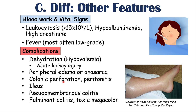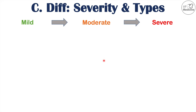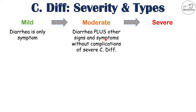Toxic megacolon is a toxic acute state of the colon with expansion or dilatation of the colon. C. diff infection is often broken down into mild, moderate, and severe — with fulminant colitis and toxic megacolon considered very severe. In a mild C. diff infection, the patient mostly only has diarrhea. In moderate C. diff, there can be diarrhea plus other signs and symptoms such as nausea and vomiting, but without the complications seen in severe cases.